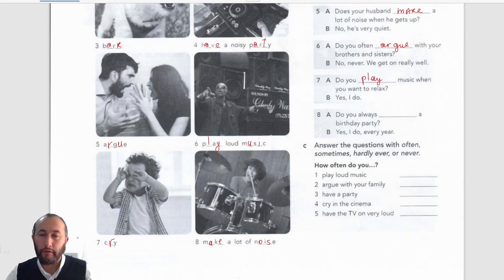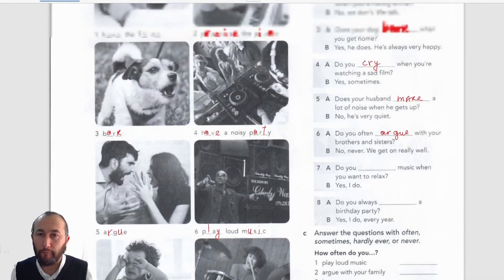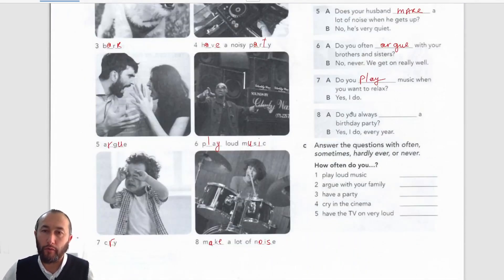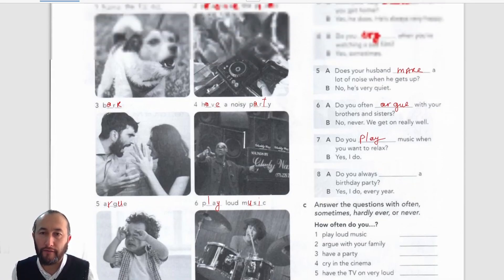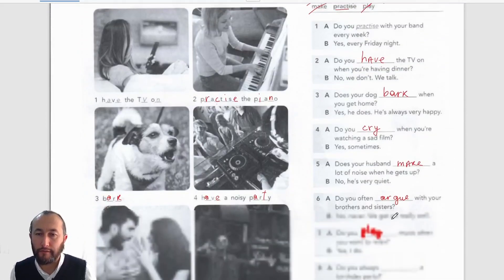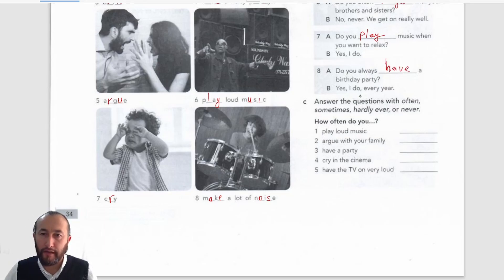Number seven: we've got one word left — 'play'. 'Do you play music when you want to relax?' 'Yes, I do.' Number eight: we're going to use 'have'. 'Do you always have a birthday party?' 'Yes, I do — every year.'